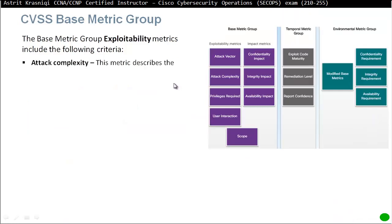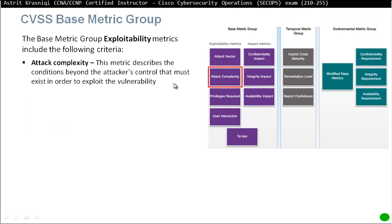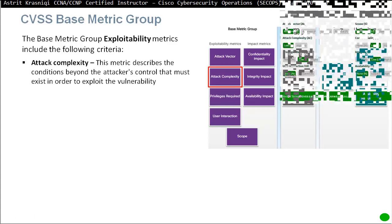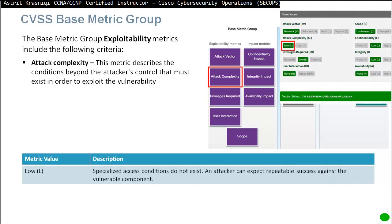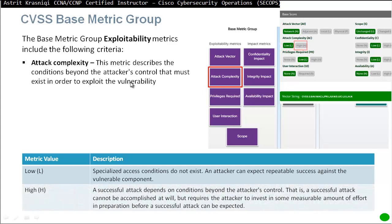The second exploitability metric is attack complexity. This metric describes the conditions beyond the attacker's control that must exist in order to exploit the vulnerability. There are two values: Low — specialized access conditions do not exist and an attacker can expect repeatable success against the vulnerable component. High — a successful attack depends on conditions beyond the attacker's control and cannot be accomplished at will, but requires the attacker to invest a measurable amount of effort in preparation.